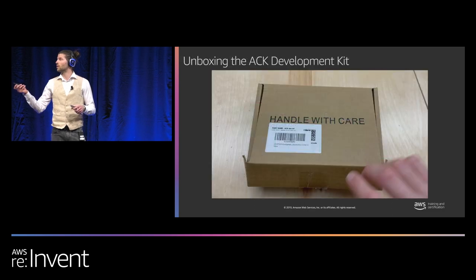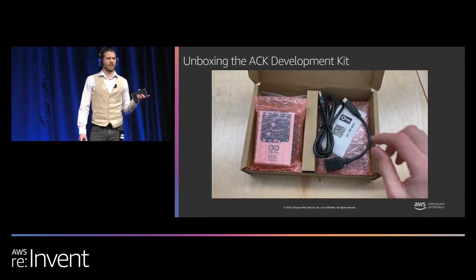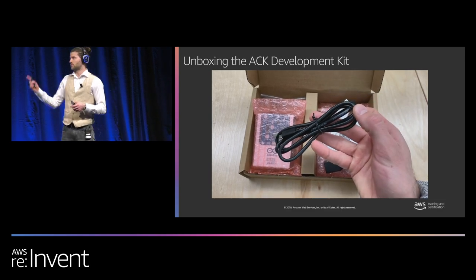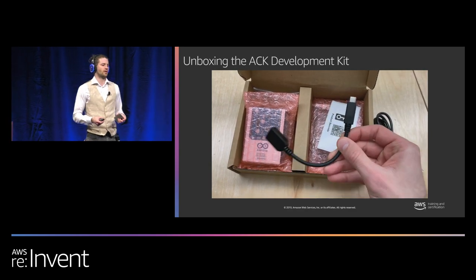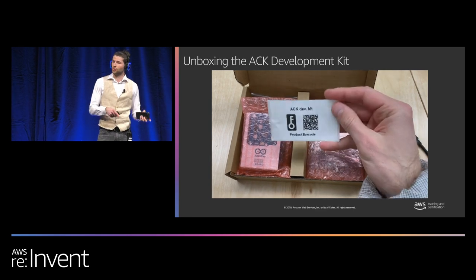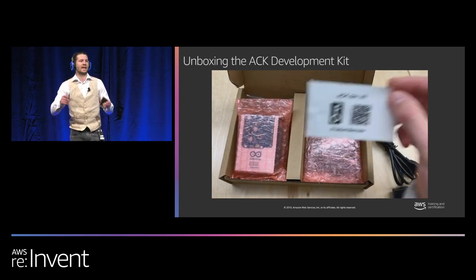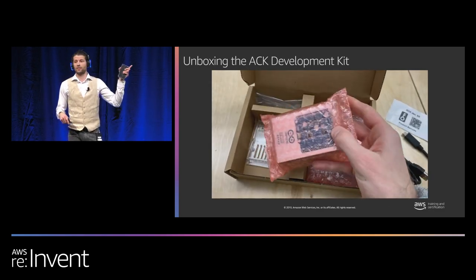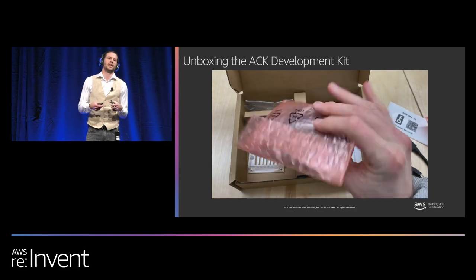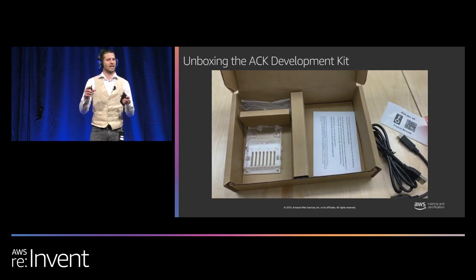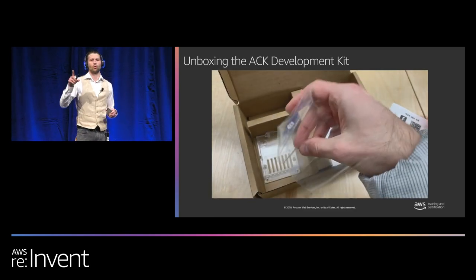So we've got our Alexa Connect Kit — it has arrived. Inside the box there are six main pieces: a micro USB cable which connects to the host microcontroller board, an Arduino board used as the host MCU to power the ACK development board, the barcode used for Wi-Fi Simple Setup, and the ACK development board which contains the ACK module.